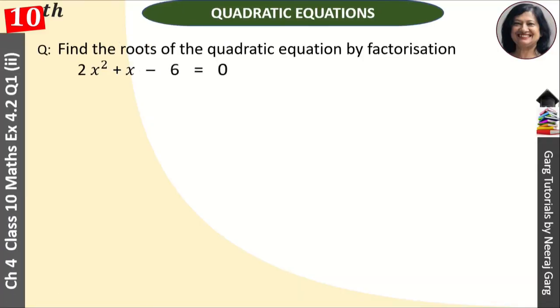Hi, this is Neeraj Garg and you are watching class 10th chapter 4 quadratic equations. Find the roots of the quadratic equation by factorization. 2x square plus x minus 6 is equal to 0.